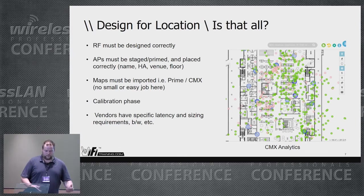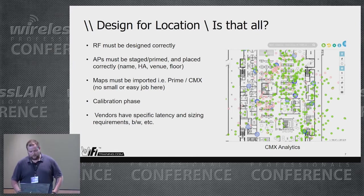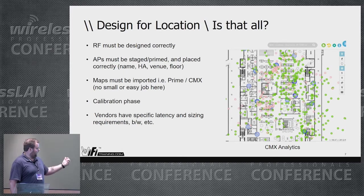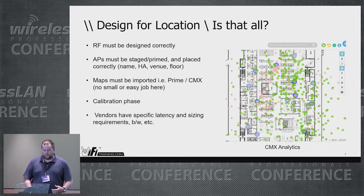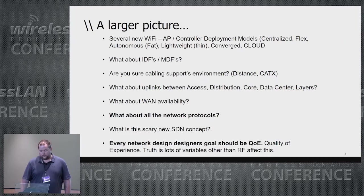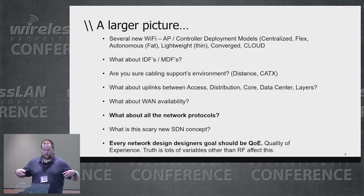If you're designing for location, just putting APs in the correct locations isn't all there is. Location services requires a correct RF design — APs have to be in the correct place — and then the fun begins. You've got to import the maps into Prime CMX, which is not a small or easy job. Then calibrate, and vendors also have specific latency and sizing requirements depending on the type of location, the amount of traffic, and the traffic between your controllers.